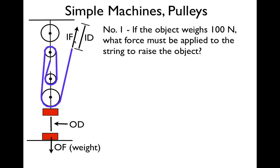Problem number one: we have an object that weighs 100 newtons. How much force do we have to apply to the string to raise the object? Well, we've been given the weight of the object. The weight is also known as the output force, so we know the output force. And we want to know how much force we have to apply — that means we're solving for the input force.